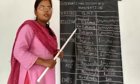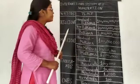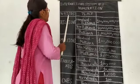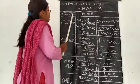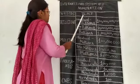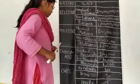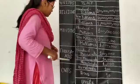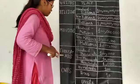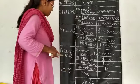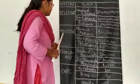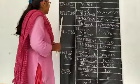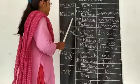Okay students, let's start revision. Periods and place values. First period: ones. Second period: thousands. Third period: millions. Fourth period: billions.